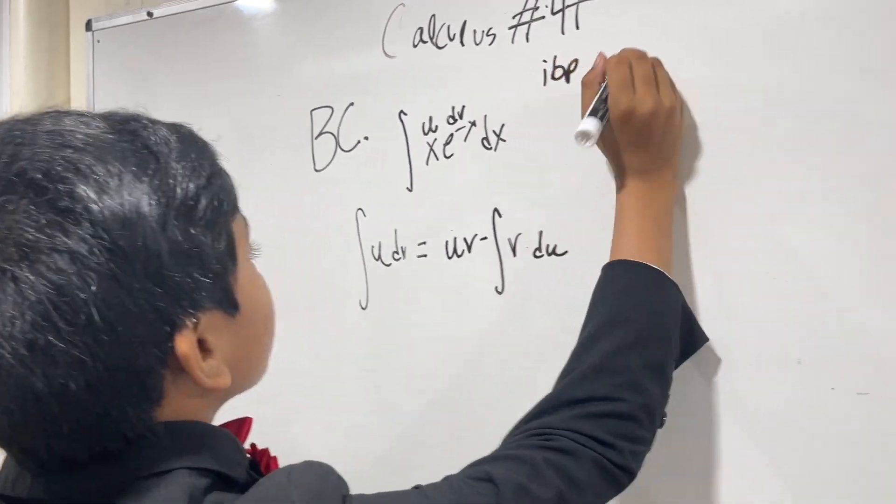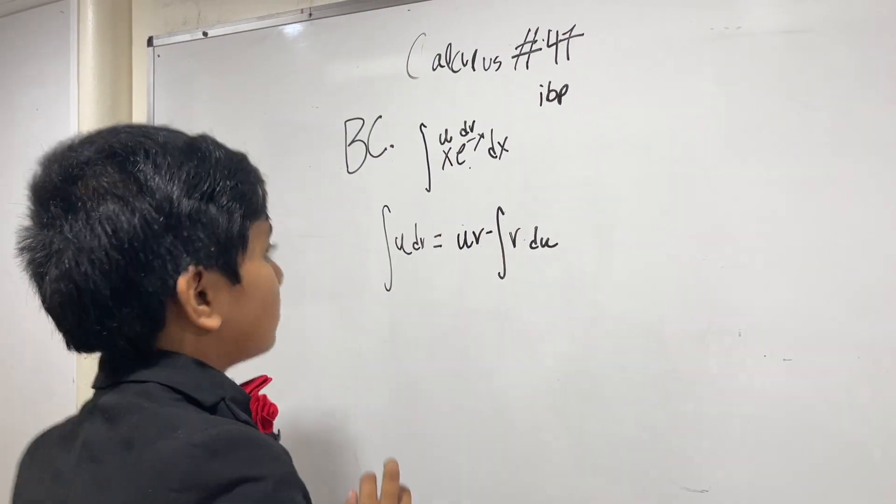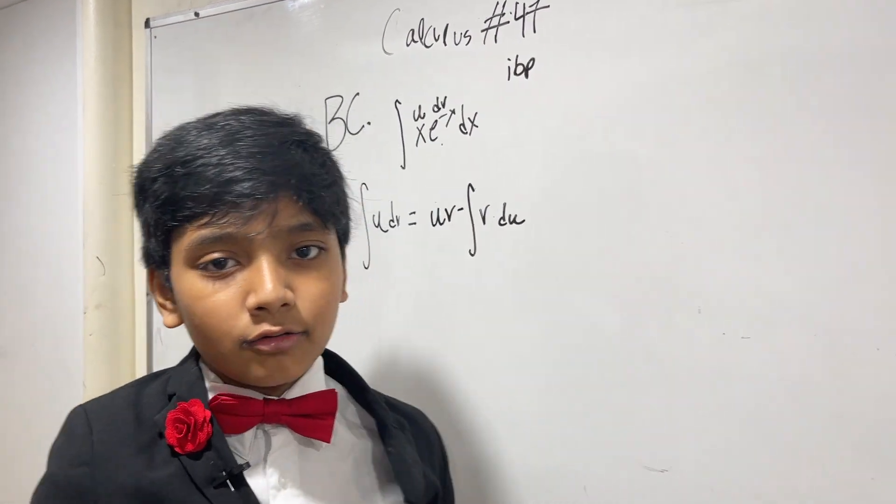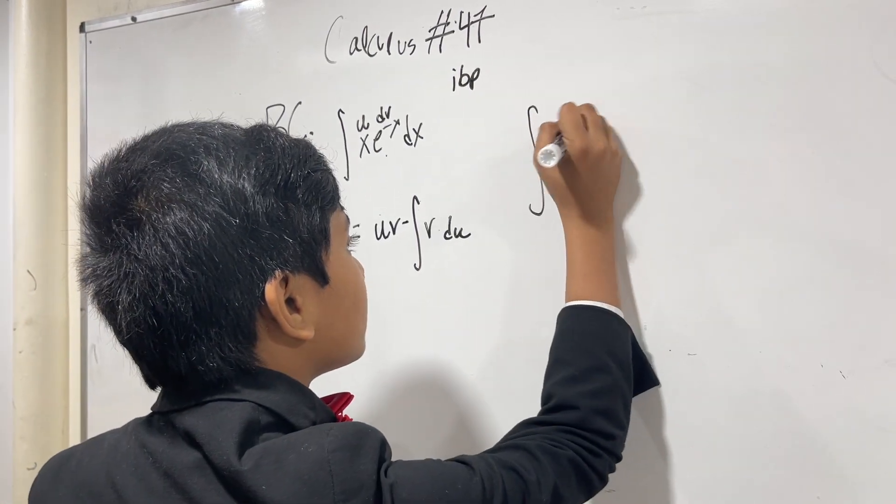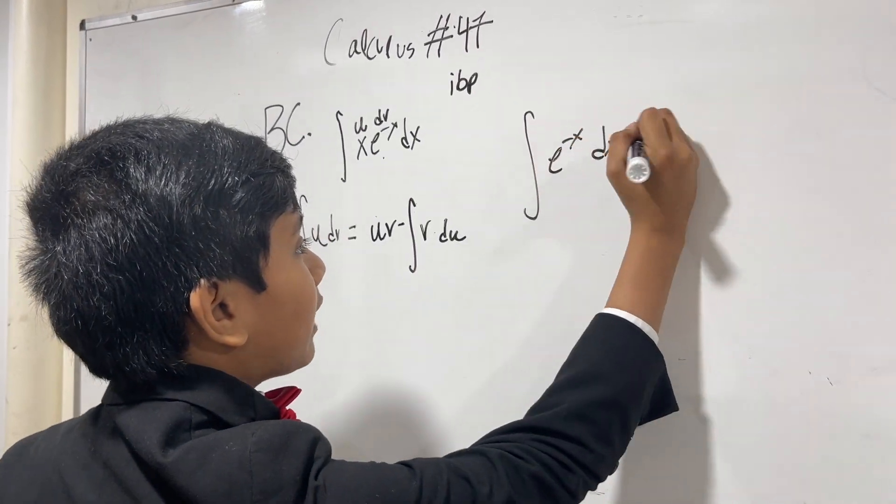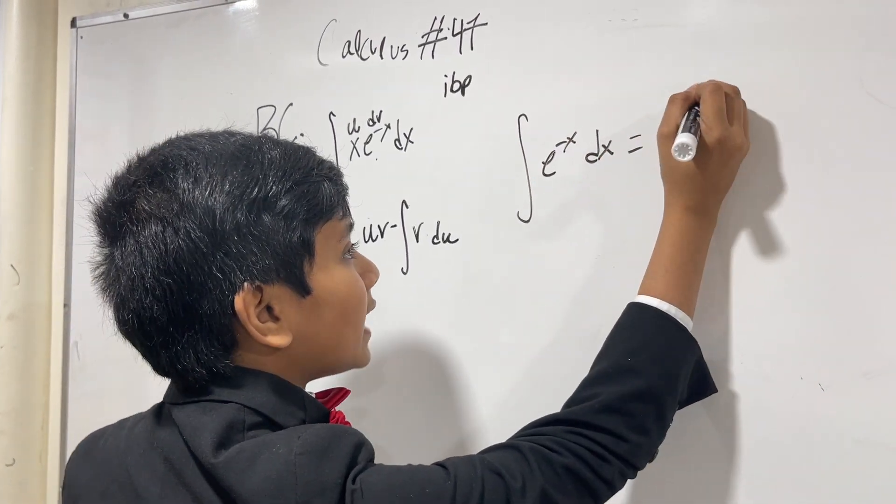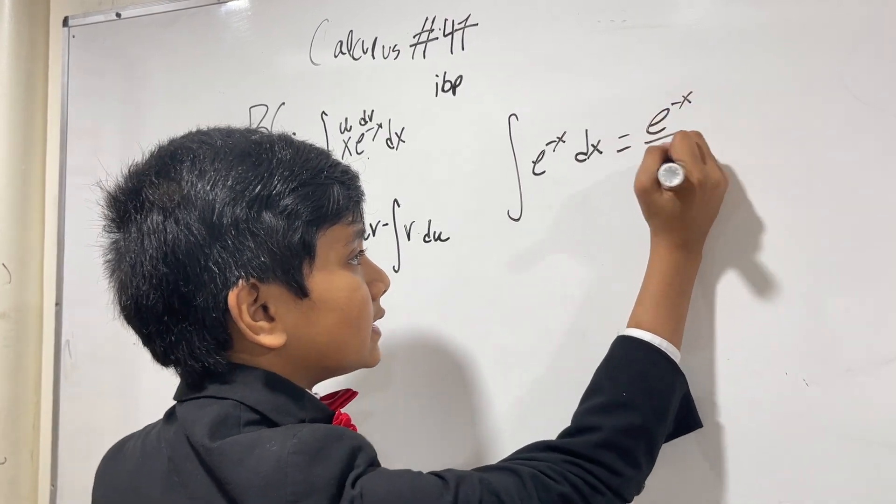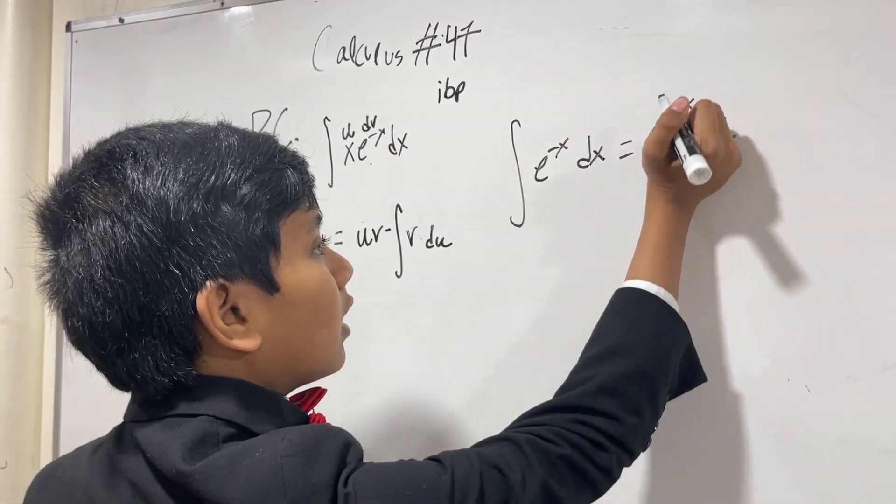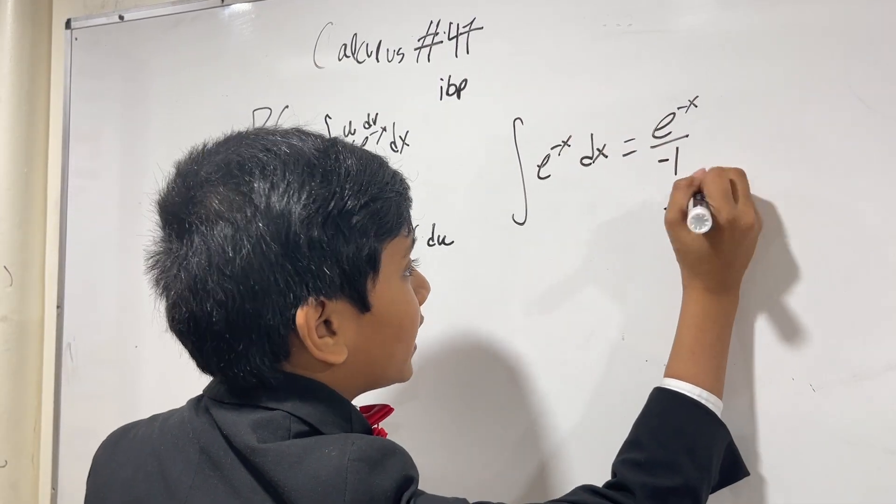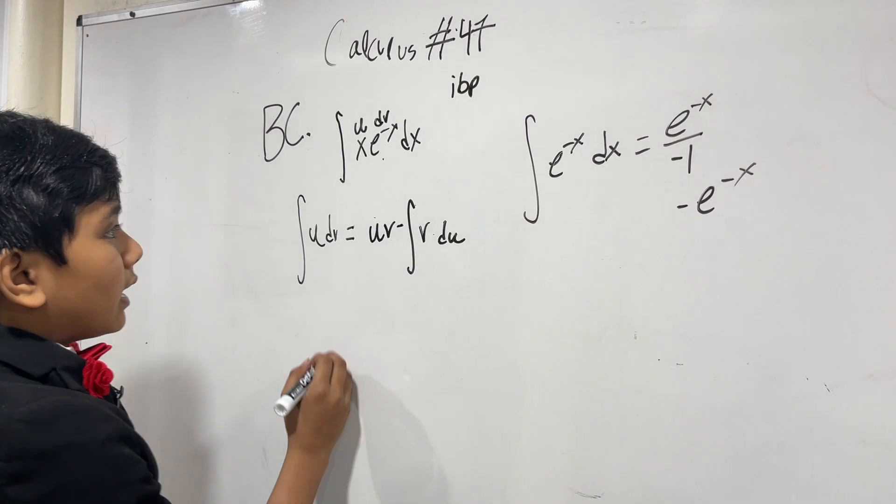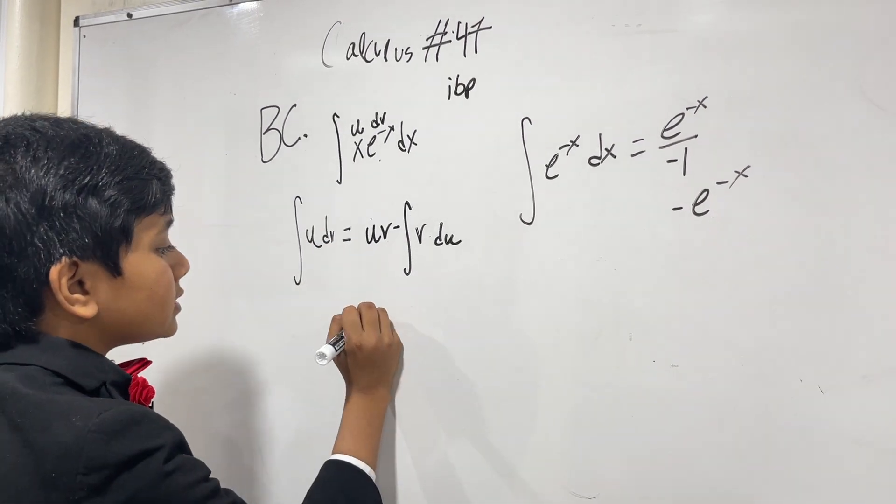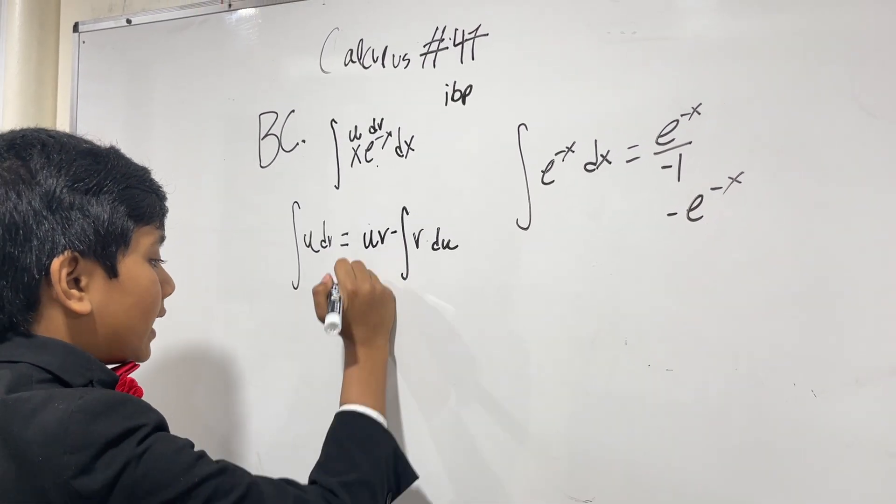What can we do? Well, what is V? How do we take the integral of e to the minus X? Well, the integral of e to the minus X DX, if you think about it, it's just e to the minus X over the derivative of minus X, which is minus 1. We don't got to include the plus C right now. We'll include it at the end. So, it's minus e to the minus X.